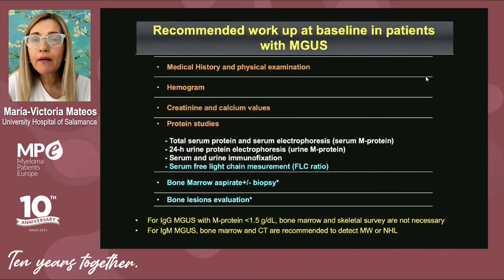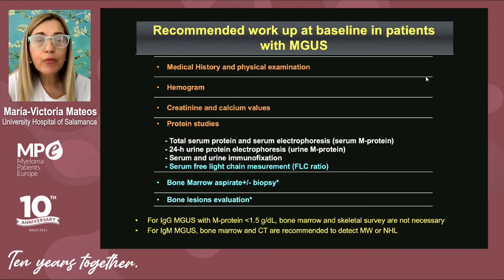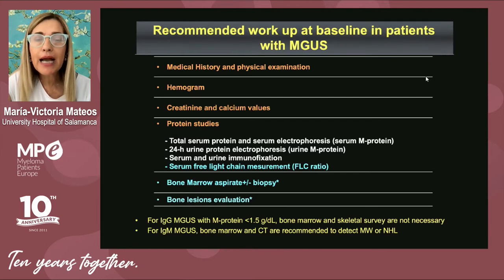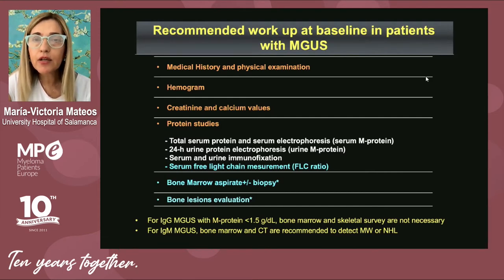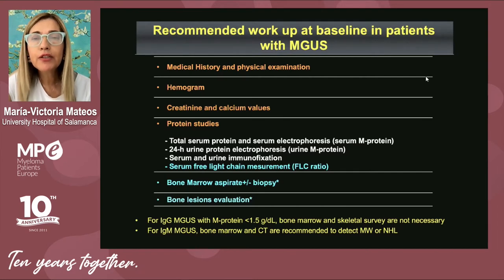This is the workup recommended when we have a patient with monoclonal hemopathy. Together with the medical history, hemogram, and biochemistry, it is very relevant to confirm the patient does not present any anemia, renal impairment, or hypercalcemia. We must perform protein studies to very well characterize the type and size of the monoclonal component. It is also possible to measure the serum free light chain and the serum free light chain ratio, as these help evaluate the prognosis and the potential risk of progression to multiple myeloma.